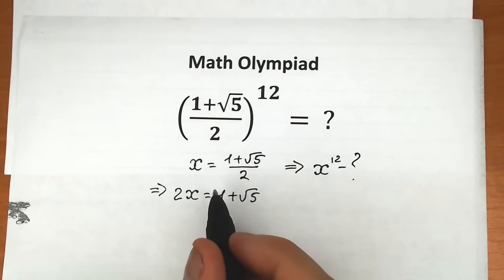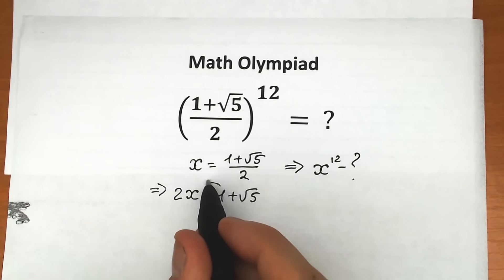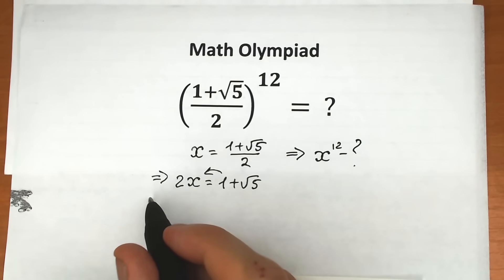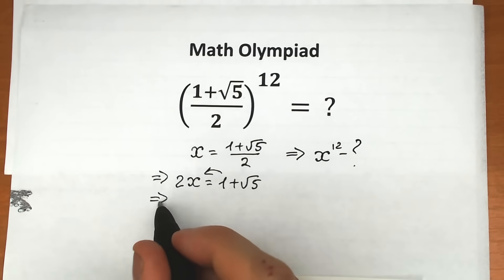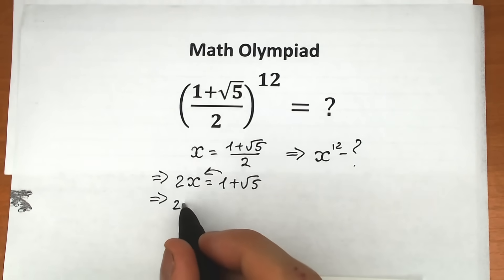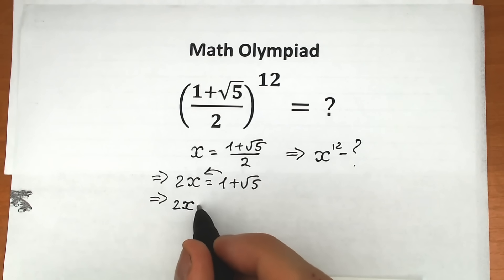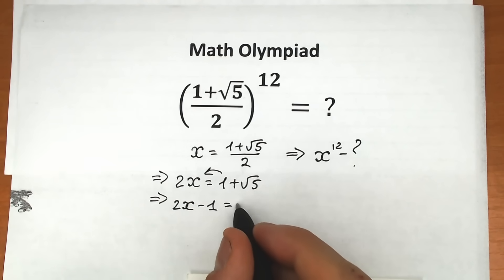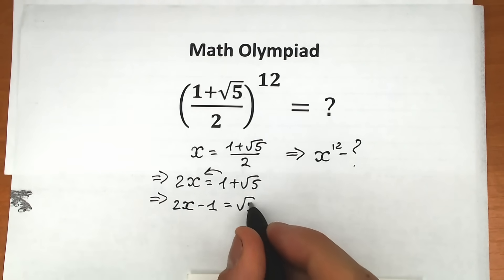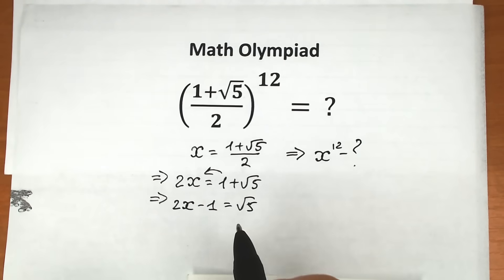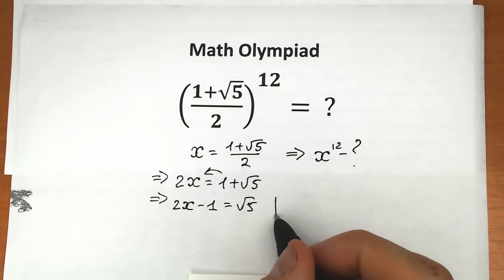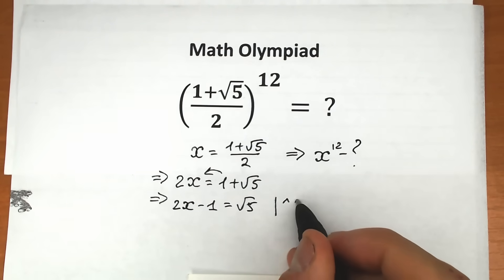Now let's bring the 1 from the right-hand side to the left-hand side. So we have 2x − 1 = √5. Now let's raise both sides to the second power — let's square both sides.